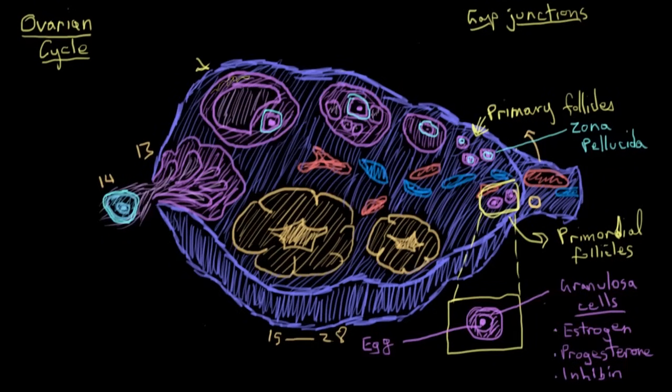So as we develop from our primordial to our primary to our next follicle here, called our pre-antral follicle, and you'll see why it's called that in a minute, the granulosa cells are actually starting to divide and become a lot greater in number. You can see that there's a pretty big difference in granulosa cell number from our primary follicles to our pre-antral follicle here. And remember, the granulosa cells are shaded in purple here. So while the granulosa cells are proliferating, this wall on the outside of the follicle, called the theca, starts to form.